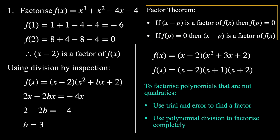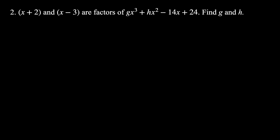So that process looks like this: use trial and error to find a factor, then use polynomial division to factorize completely. Now let's look at another example. Another use of the factor theorem is finding missing coefficients in a polynomial. This question says x + 2 and x − 3 are factors of gx³ + hx² − 14x + 24; find g and h.